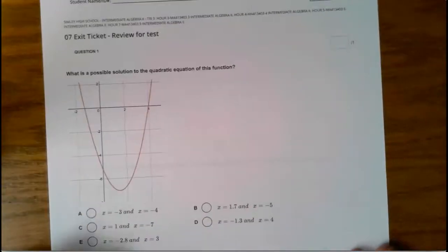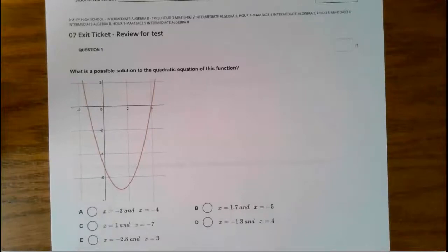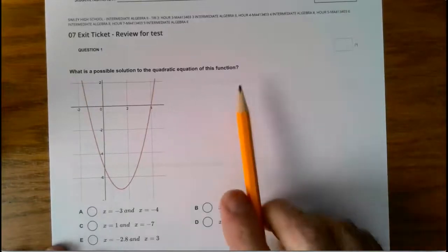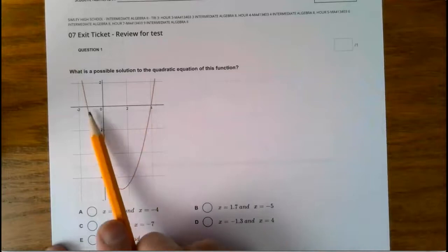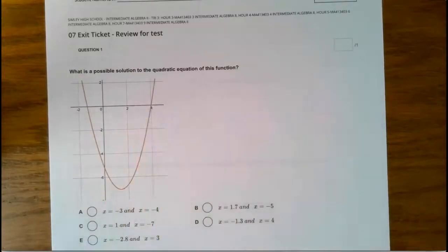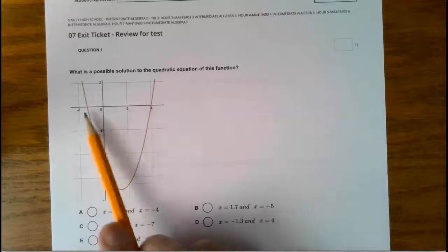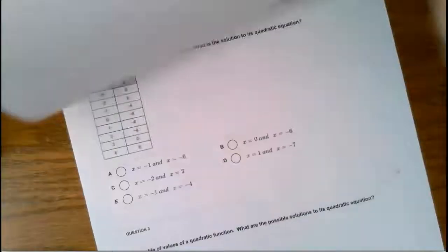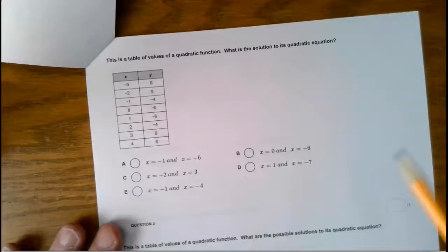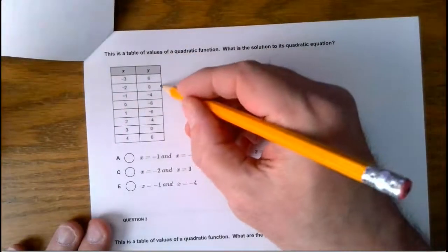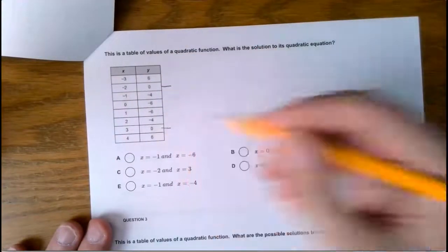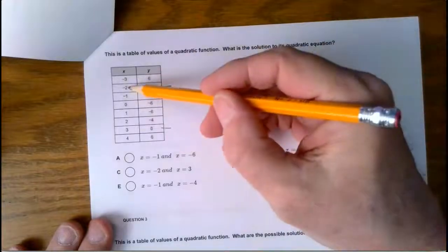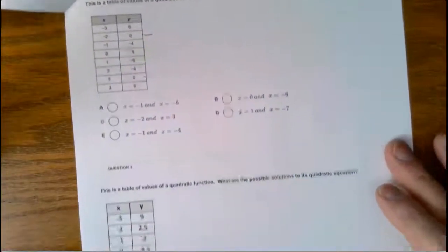There's the last thing. The last thing was the exit ticket. Again, we're kind of reviewing for the test. Possible solutions. Look where it crosses the x-axis. Those are the two solutions right there. Okay, where does it cross the x-axis? This is a table. Look where y equals 0. y equals 0 right there. y equals 0 right there. So our answers are negative 2 and 3. Look at the x for your answers.